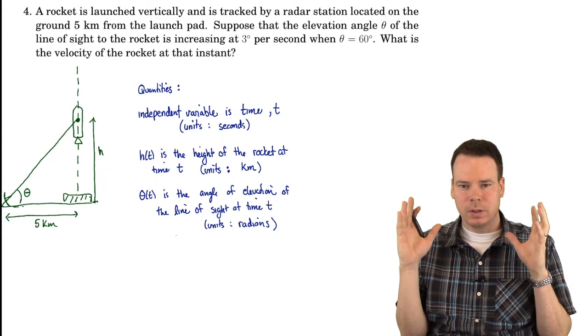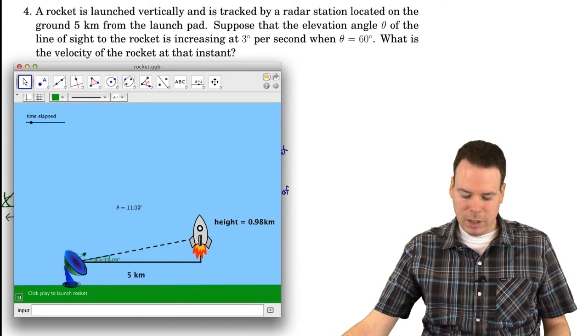So here's what I have. I have an image of a rocket and a station that's tracking it, and then I imagine the rocket launching and increasing in speed.